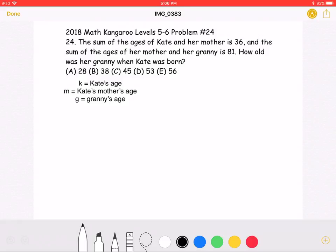From the problem, we know that the sum of the ages of Kate and her mother is 36, and that the sum of her mother's age and granny's age is 81.